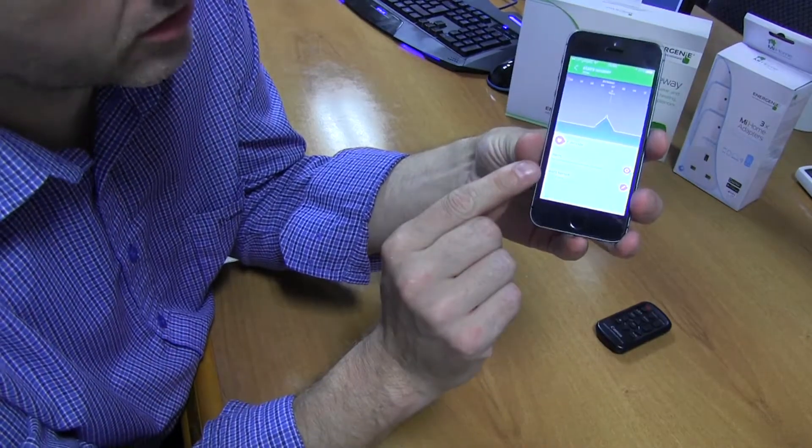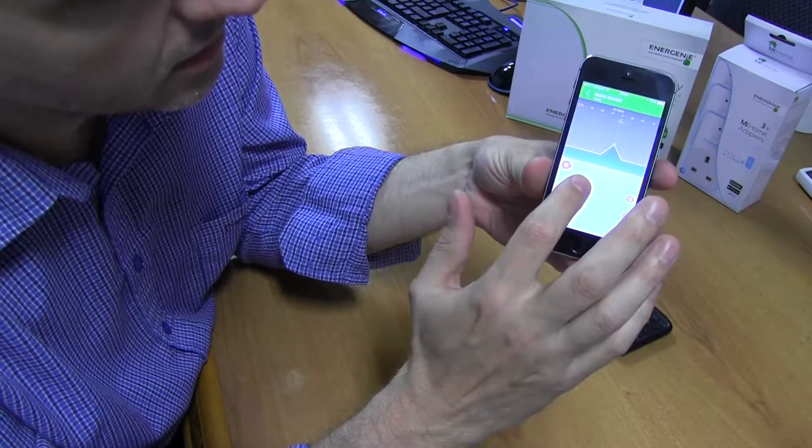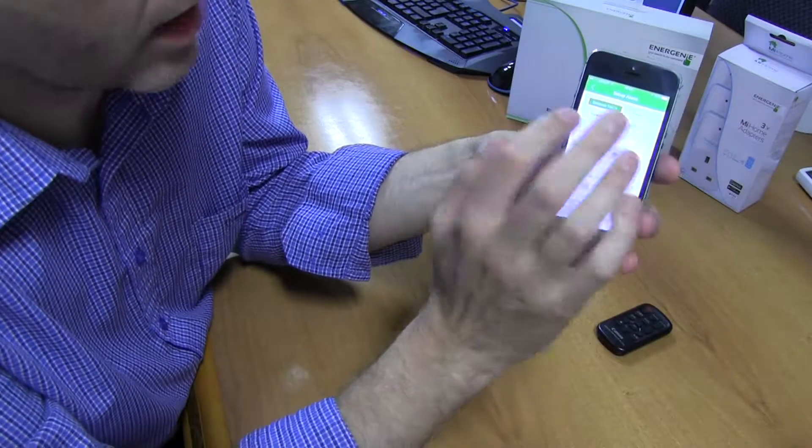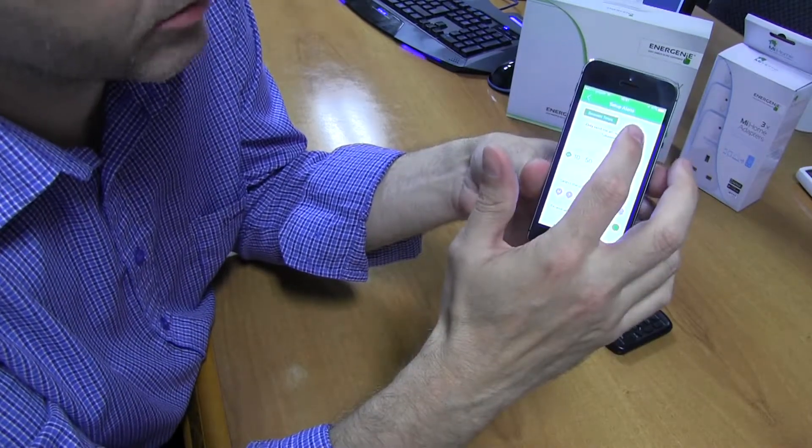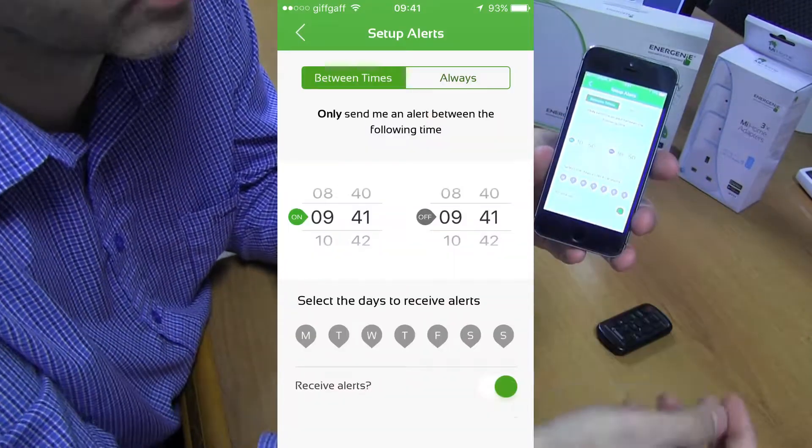So what I want to do is I can tap here to rename it but I don't want to rename it just yet and I want to get an alert. So I'm going to set the sensor. I can actually set this to send me an alert all the time so whenever the sensor goes off it will set an alert or between certain times.